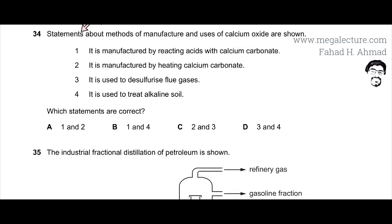The following question reads that statements about methods of manufacture and uses of calcium oxide are shown. Now, calcium oxide is lime. It's frequently used in a lot of different ways, specifically for curing acidic soil and removing acidic gases from factory flue gases.